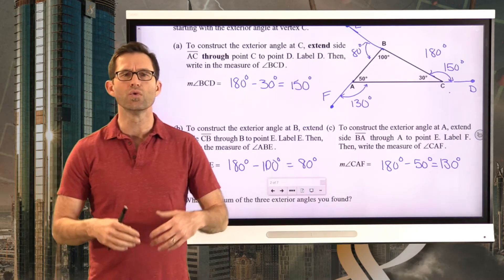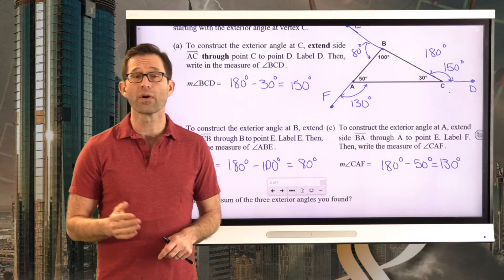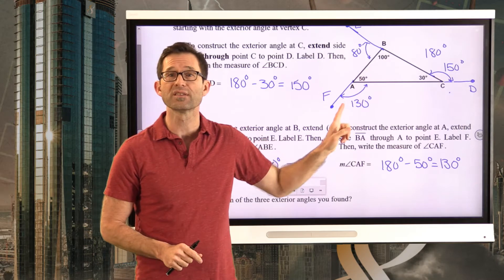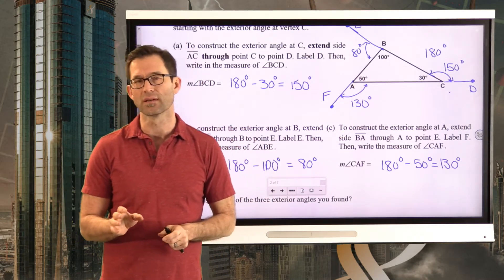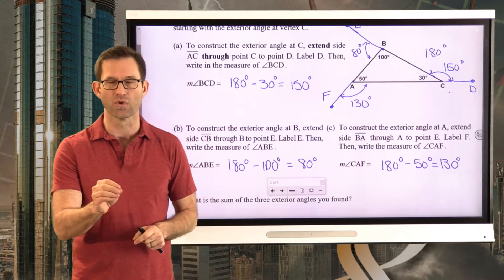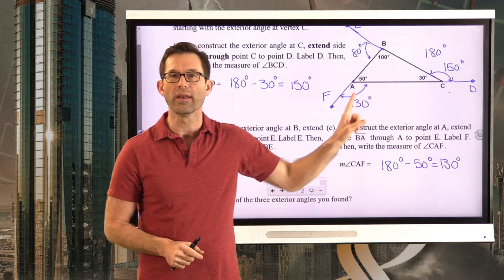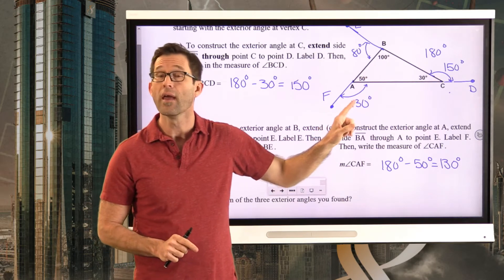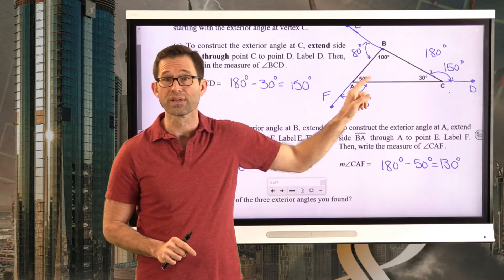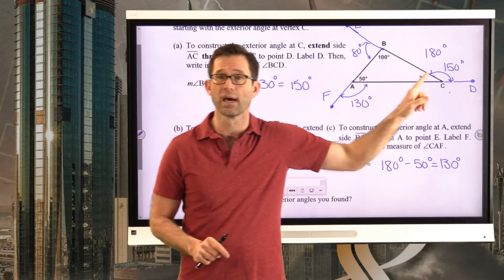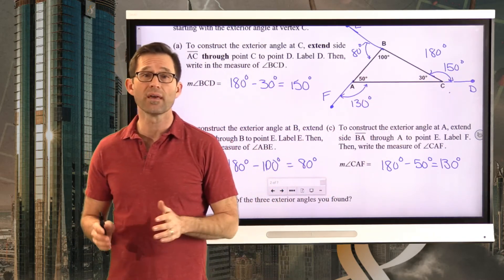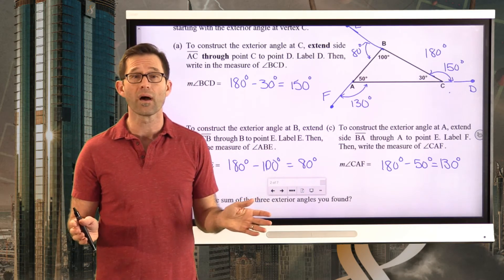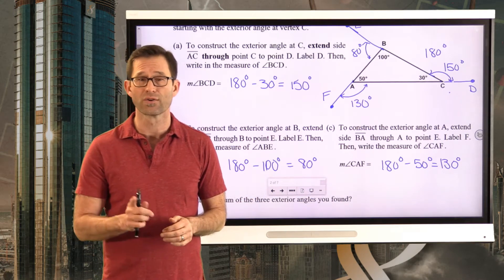It's very easy to create exterior angles, and of course it's very easy to find their measures if we know the interior angle that's adjacent to it. Adjacent means right next to or touching — these two angles are right next to each other. They're adjacent angles, and they're supplementary, meaning these two angles add to 180. That's because we're extending the sides of the triangles to create those exterior angles. We can do that with any kind of figure, but today we're just going to concentrate on triangles.